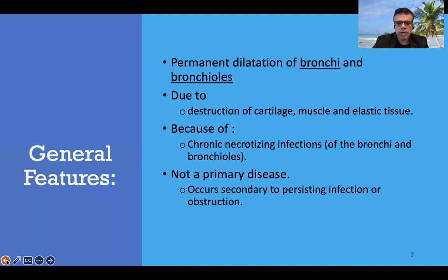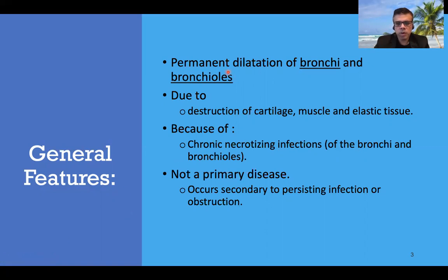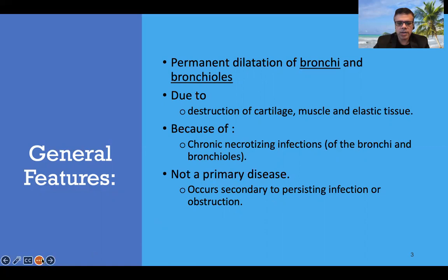Bronchiectasis is a permanent dilatation of bronchi and bronchioles due to destruction of cartilage, muscle, and elastic tissue. The key word here is permanent dilatation. Various causes include chronic necrotizing infections; it could be secondary to persisting infection or obstruction. Generally, it is not a primary disease — it is a secondary disorder.